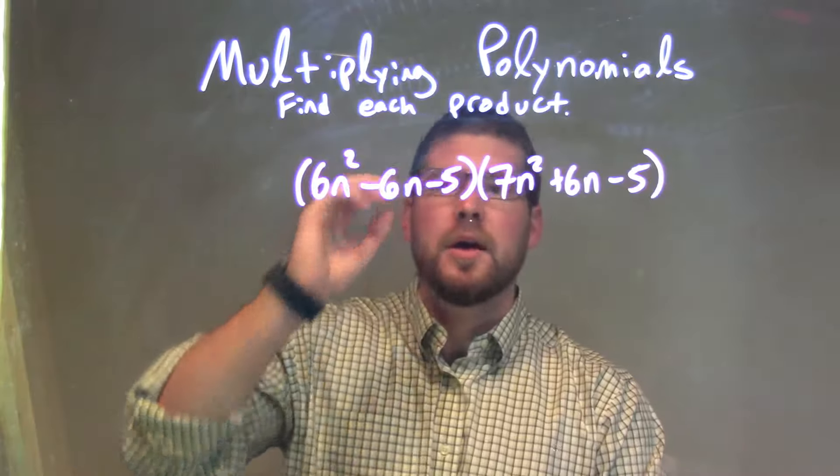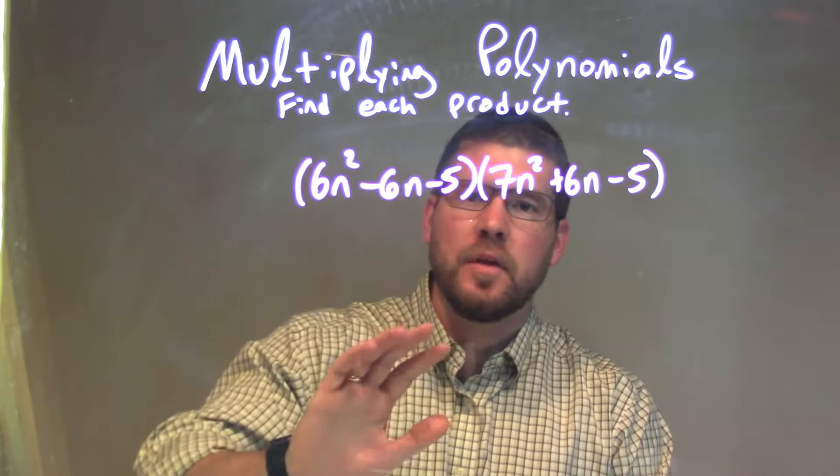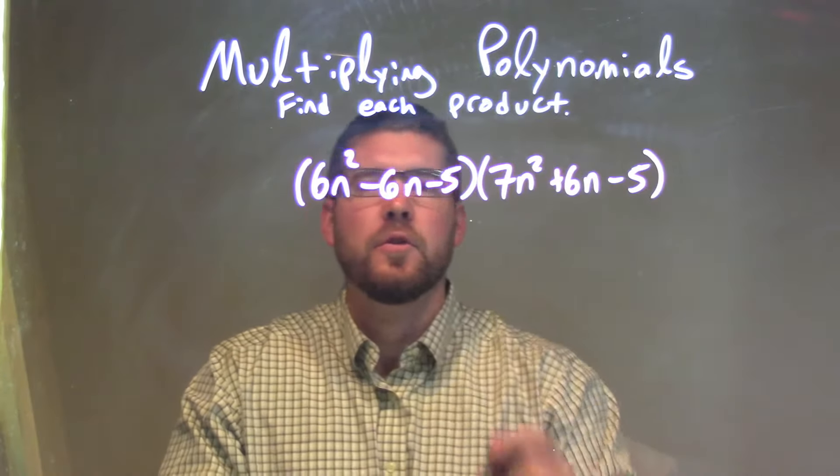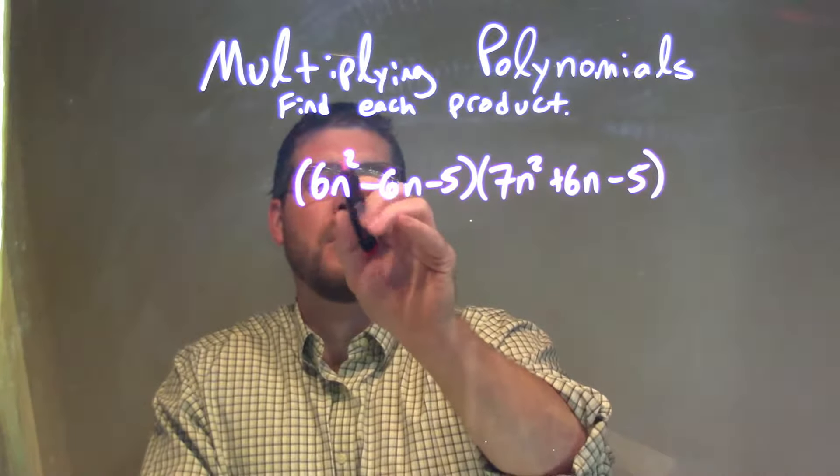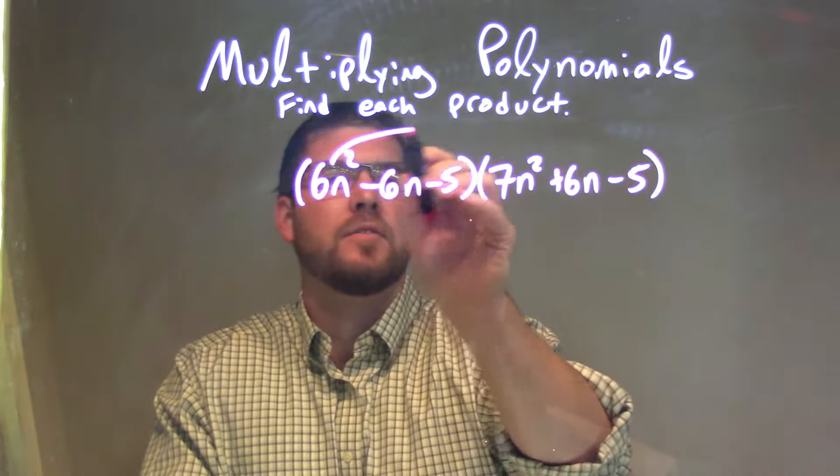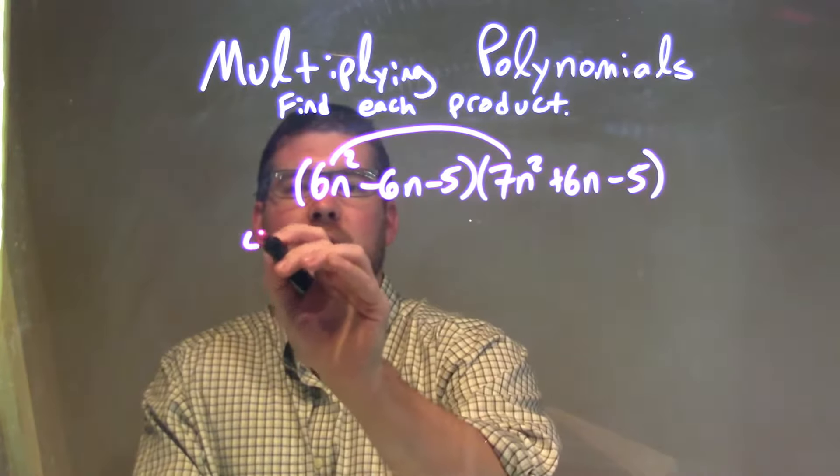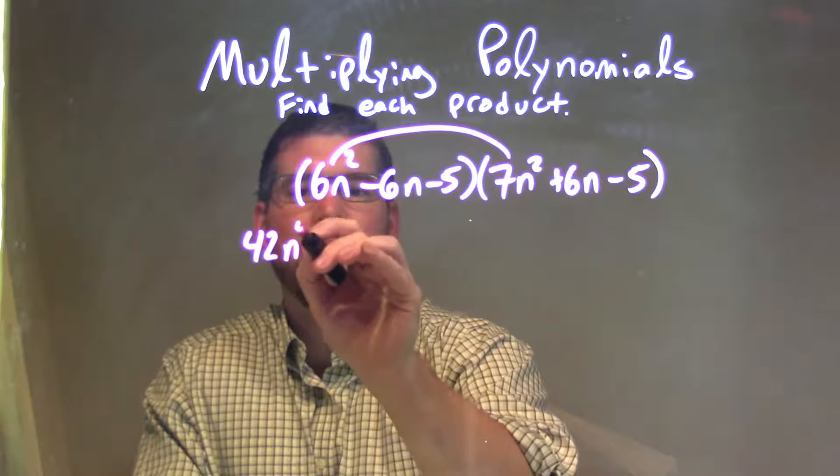Well, what I want to do is multiply all parts of my first parenthesis by all parts of my second parenthesis. So the first one here, I'm going to take my 6n squared. Let's draw the arcs so we know we can make a connection. 6n squared times 7n squared, which comes out to be a 42n to the fourth power.